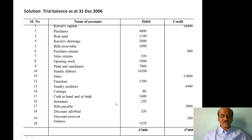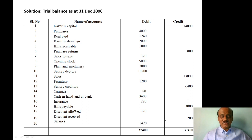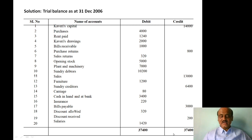Cash and bank 3,400 — asset — debit column. Insurance — expense — debit column. Bills payable — liability, credit balance — credit column, 3,000. Discount allowed — debit column, 320. Discount received — income — credit column, 200. Salaries 1,420 — expense — debit column. Debit column total: 37,400. Credit side total: 37,400. The trial balance tallies.